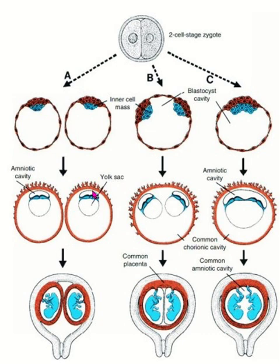The amniotic cavity is hugely enlarged and the yolk sac cavity is reduced in size. The amniotic cavity is fused with the chorionic cavity. This type of pregnancy is known as dichorionic-diamniotic twin pregnancy, meaning there are two amniotic cavities, two chorionic cavities, and two placentas.